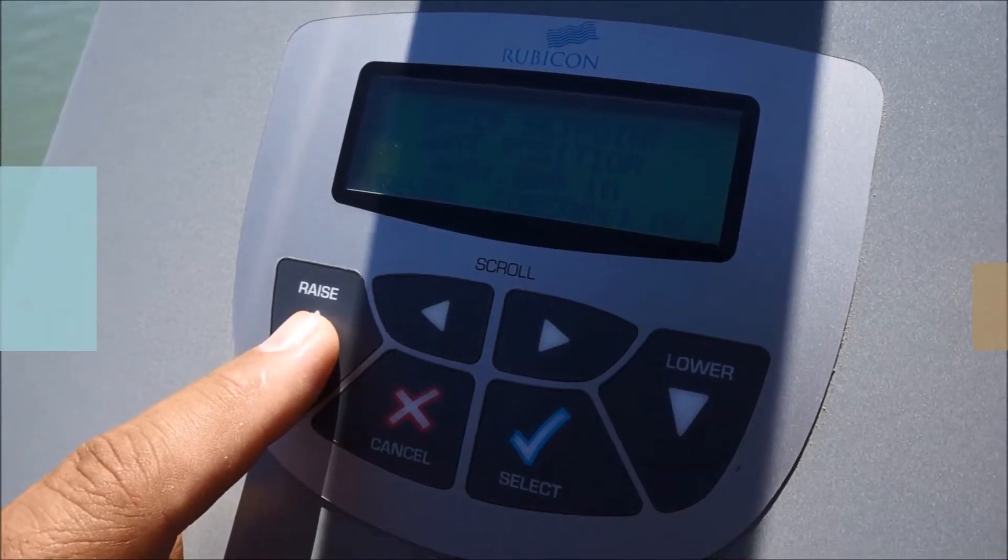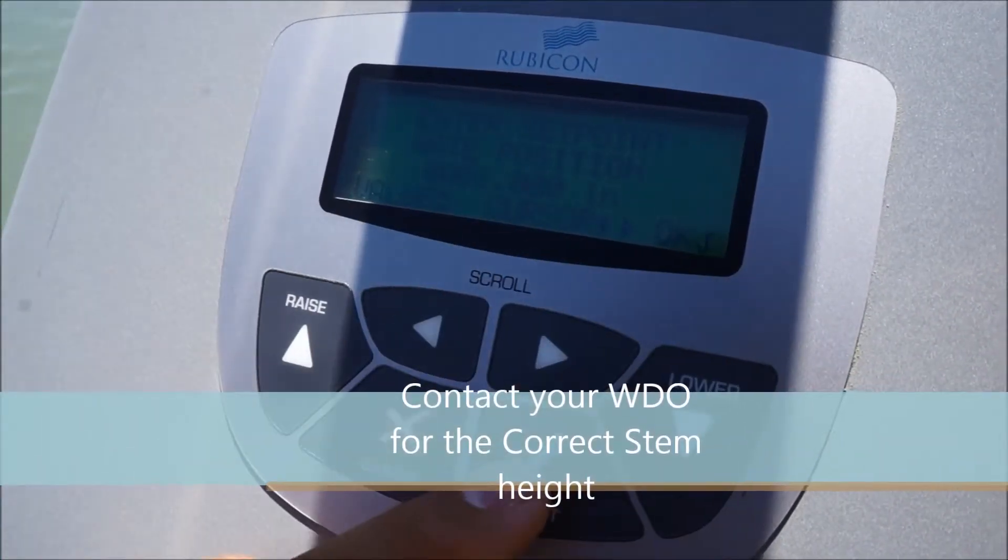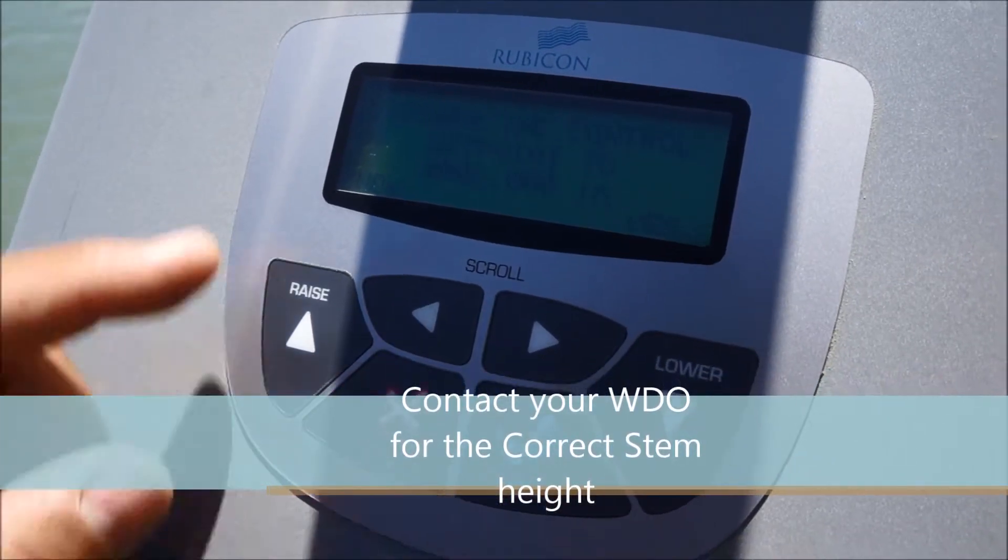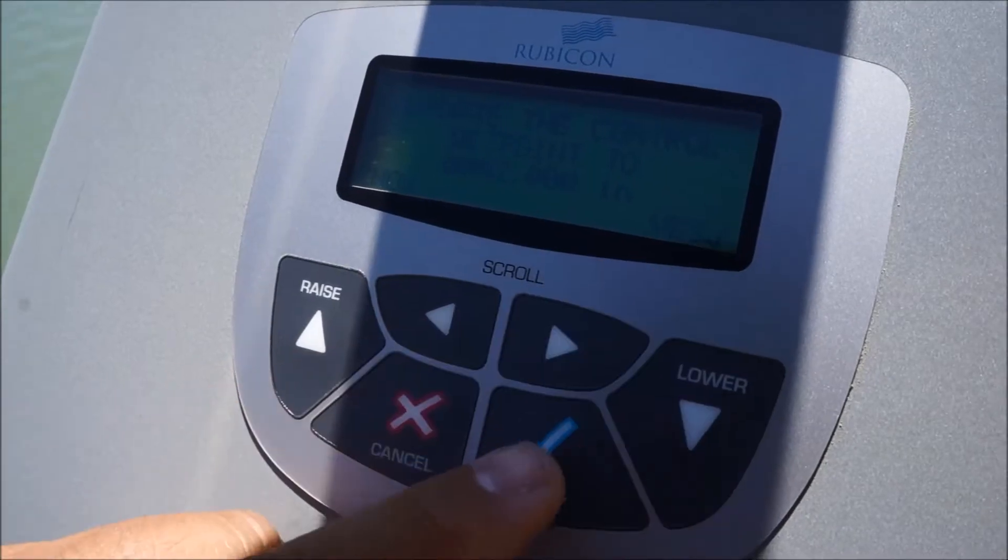For practice, let's put in two inches and then we're going to hit okay. Once we're okay with what we entered, it's going to ask you a second question: update the control set point to two inches. Yes, we want to confirm that.